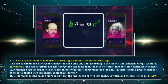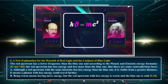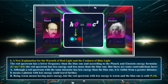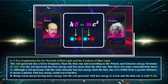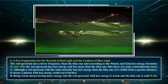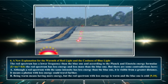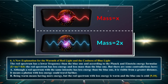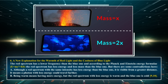A new explanation for the warmth of red light and the coolness of blue light. The red spectrum has a lower frequency than the blue one, and according to the Planck and Einstein energy formula, the red spectrum has less energy and less mass than the blue one. But there is some contradiction here: although a red spectrum with the same intensity has less energy than the blue one, it is visible from a greater distance — meaning a photon with less energy could travel farther. Being warm means having more energy, but the red spectrum with less energy is warm and the blue one is cold.